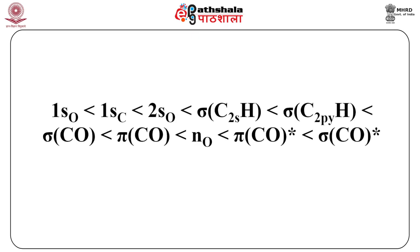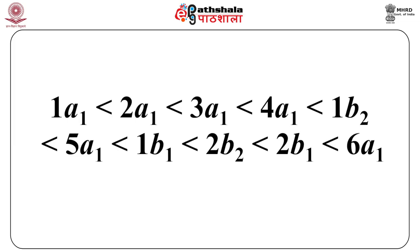The orbital energy ordering is: 1s(O) [1a1], 1s(C) [2a1], 2s(O) [3a1], σ(2s on H) [4a1], σ(2py on H) [1b2], σ(C–O) [5a1], π(C=O) [1b1], non-bonding on O [2b2], π*(C=O) [2b1], and σ*(C=O) [6a1]. The C–H σ* anti-bonding orbitals are very high in energy and are not included. The labels follow the convention of numbering each symmetry species in order of increasing energy.